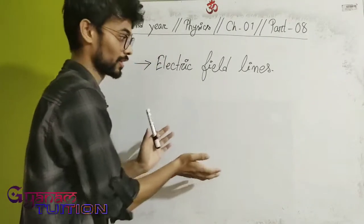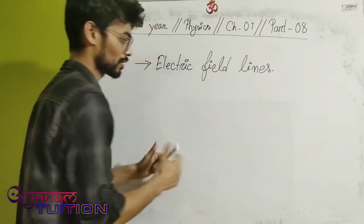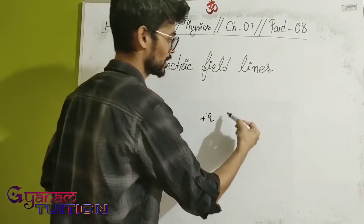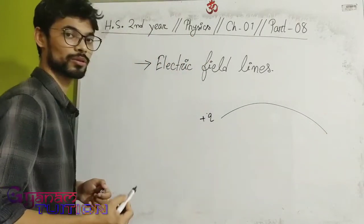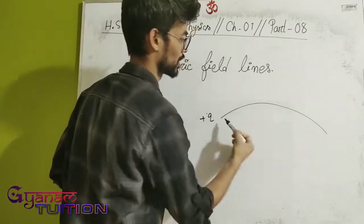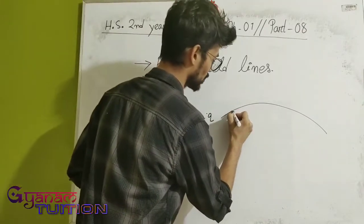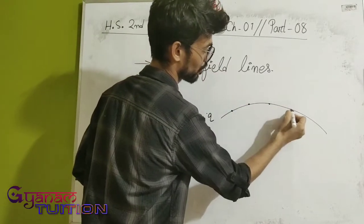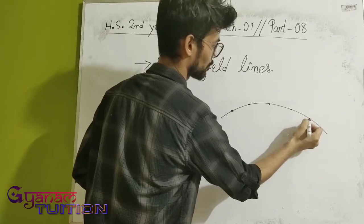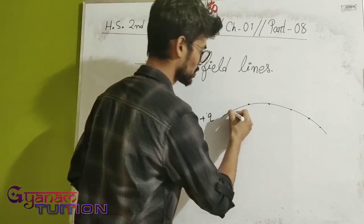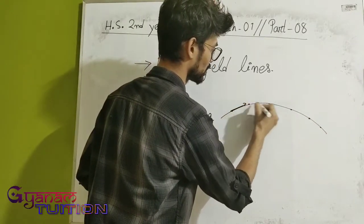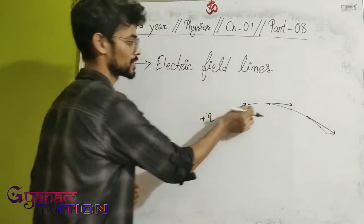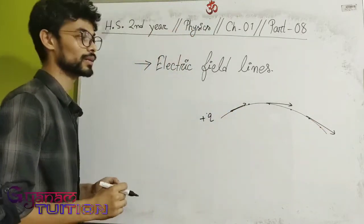Suppose an electric field exists in a space with a positive charge +Q. As a positive test charge moves, it traces a curved path through many points. At any particular point on this path, you draw a tangent, and the direction of that tangent gives the direction of the electric field at that point.